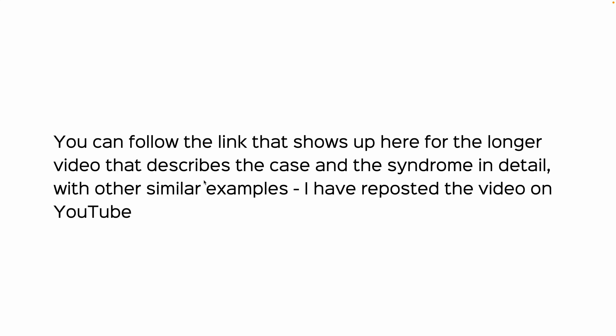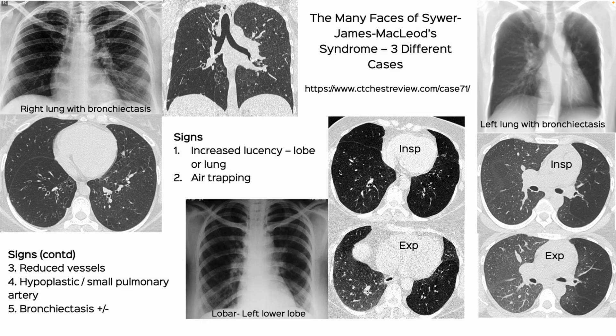Swyer-James MacLeod syndrome is basically a constrictive bronchiolitis of the entire lung — sometimes it can affect one entire lobe and we can still use the name. At the top right there's a link to the video in which I described this case in detail: the reason we got to the diagnosis, multiple other cases, and the differentials. I'm also experimenting — I just learned how to use a card, which should show up in the top right corner; otherwise I'll put a link at the end as well.